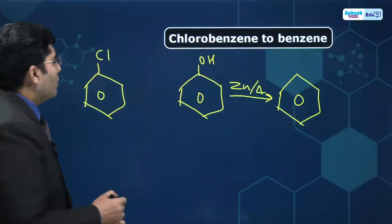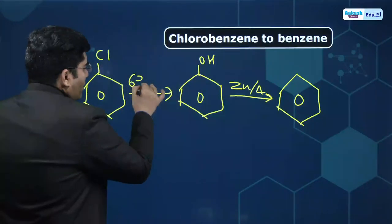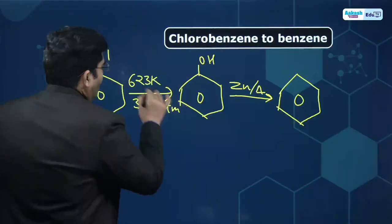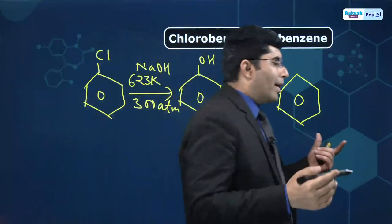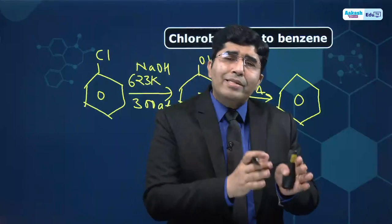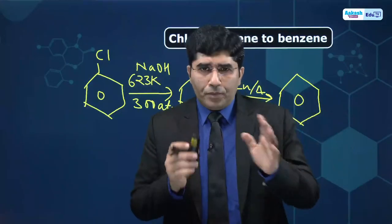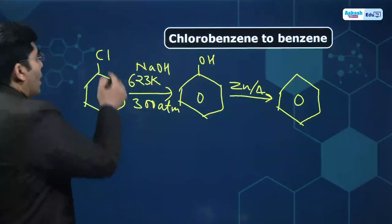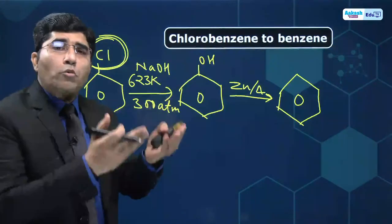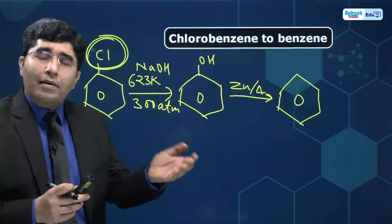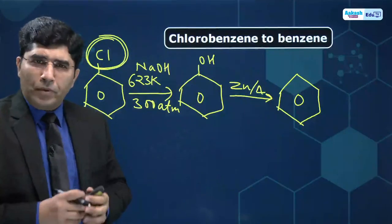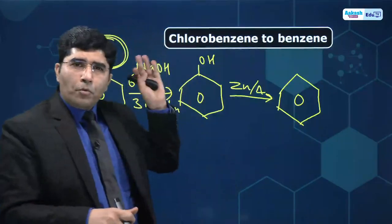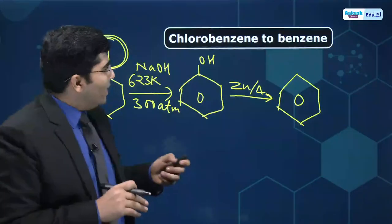At high temperature and high pressure, we will find a connecting link — this is the Dow process: 623 Kelvin and 300 atmospheres. This is called the Dow process. This is the basic thing. But the truth is you can't learn this just from books — you will find this platform to help.